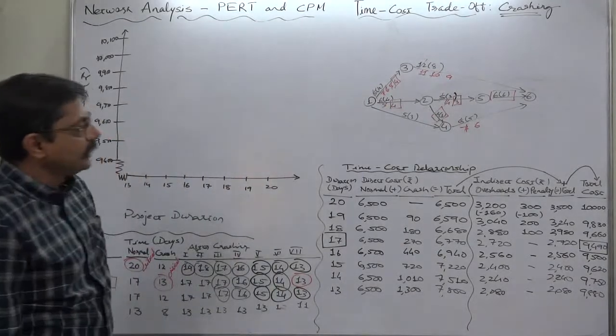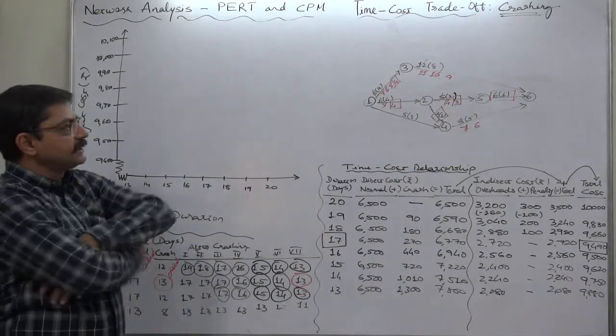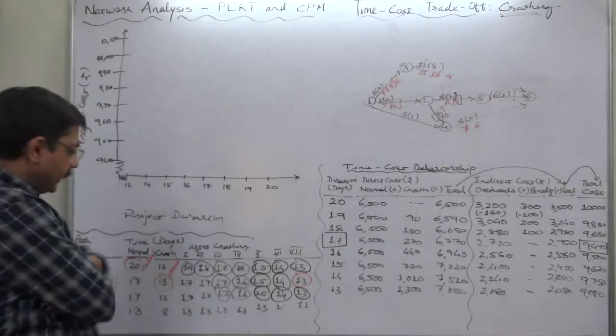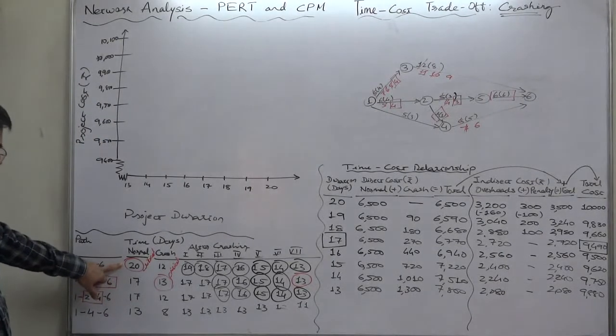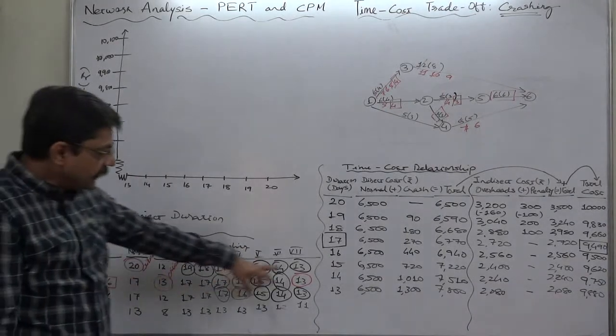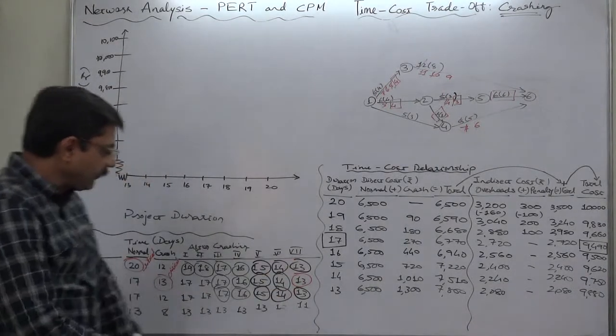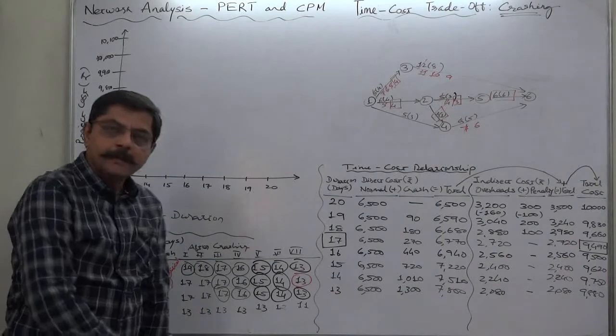In the previous two lectures we tried to understand the process of crashing and ultimately from the critical path of having duration of 20 days we have reached three critical paths of having duration of 13 days. Many of you may have a question that why should we not try to crash further this project.